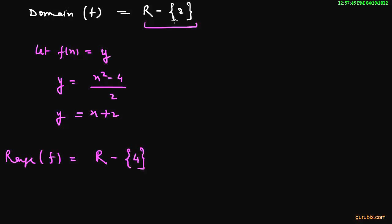Because the function is not defined at x equals 2, it will never take a value equal to 4. Since x will not take the value 2, y will not have the value 4 anywhere. So the range of the function is the set of real numbers except 4.